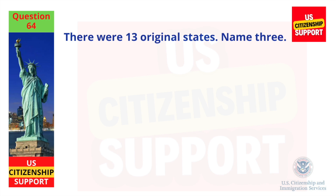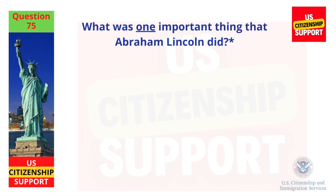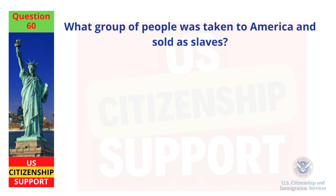There were 13 original states — name three. New York, New Jersey, Pennsylvania. What was one important thing that Abraham Lincoln did? Freed the slaves. What group of people was taken to America and sold as slaves? Africans.